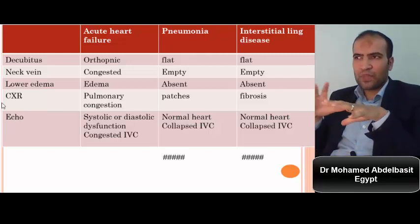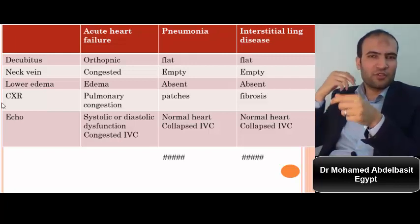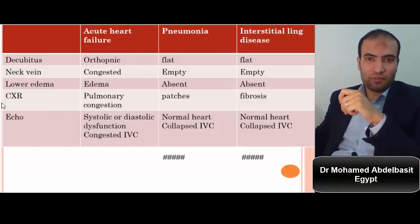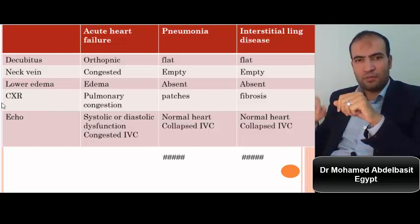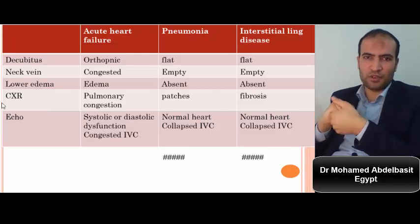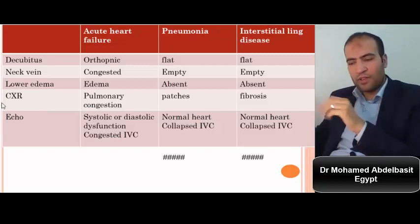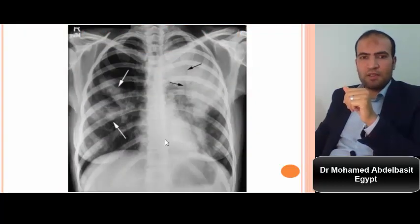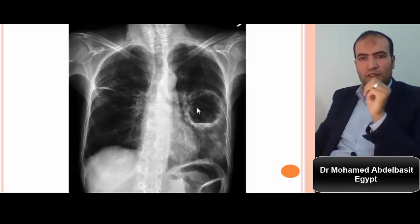If no echocardiography is available in the emergency room, you can insert an external jugular cannula to assess jugular venous pressure. If the jugular venous pressure is zero, it is impossible for the patient to have acute pulmonary edema — there must be a chest cause for the crepitations. But if the jugular venous pressure is high, the probability of acute heart failure is high. Chest X-ray may show patches of chest infection with normal cardiac shadow, or shadows of lung abscess.